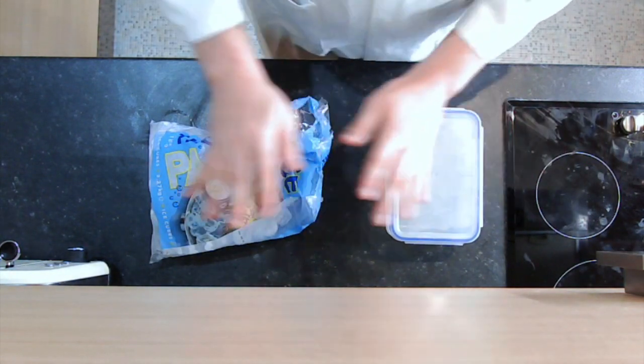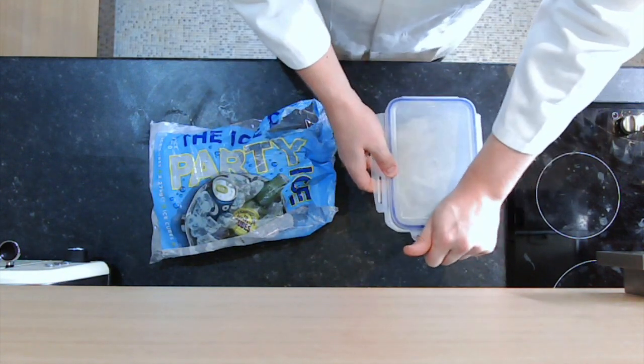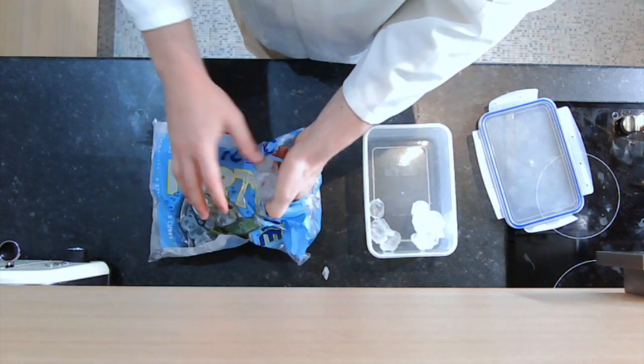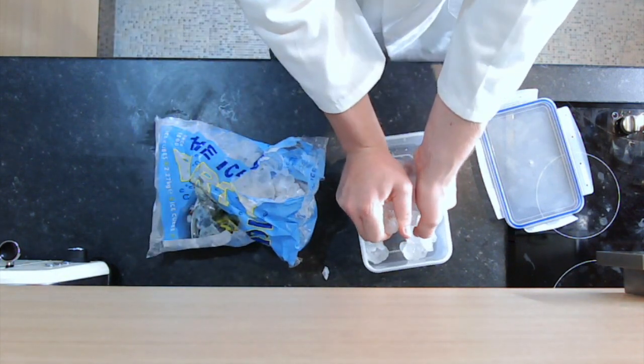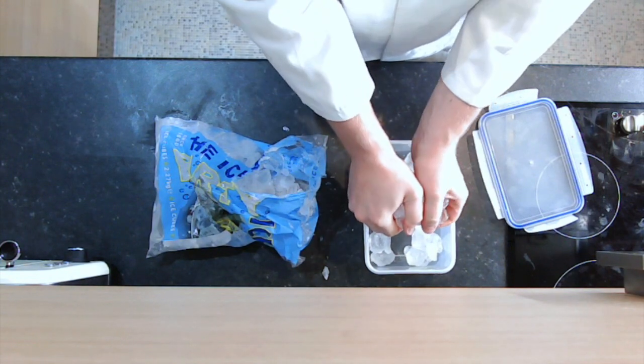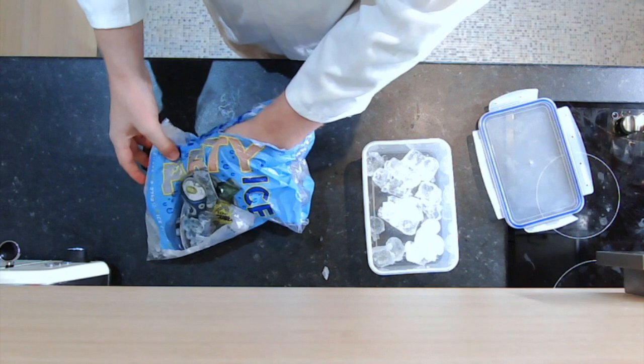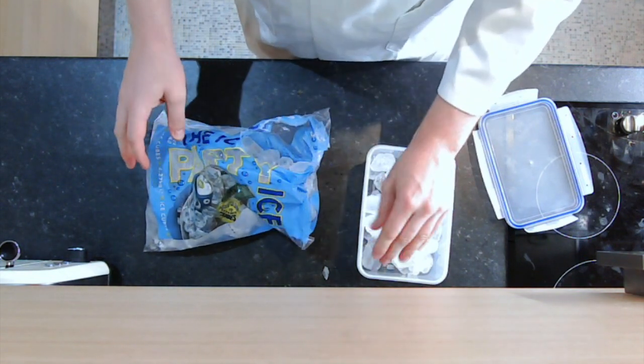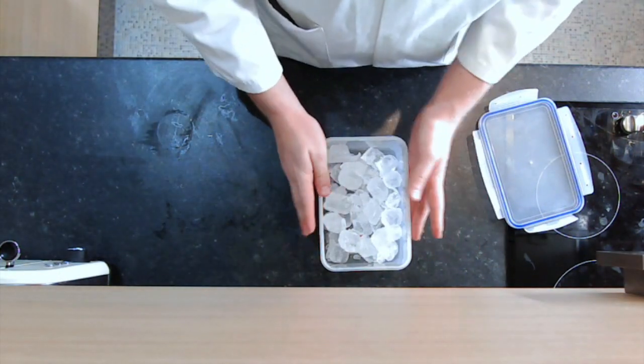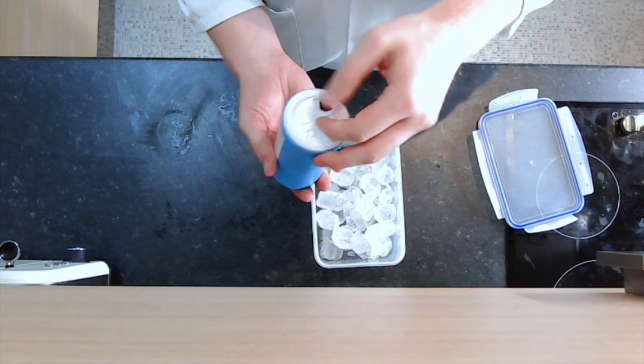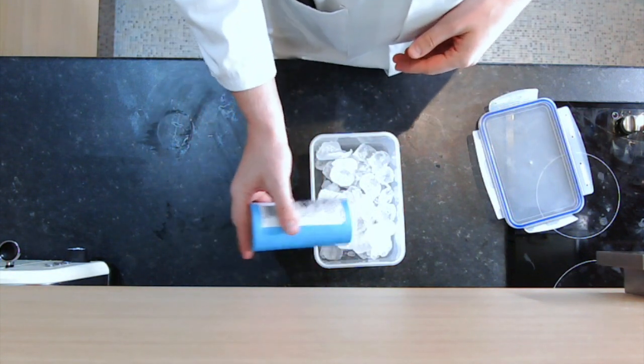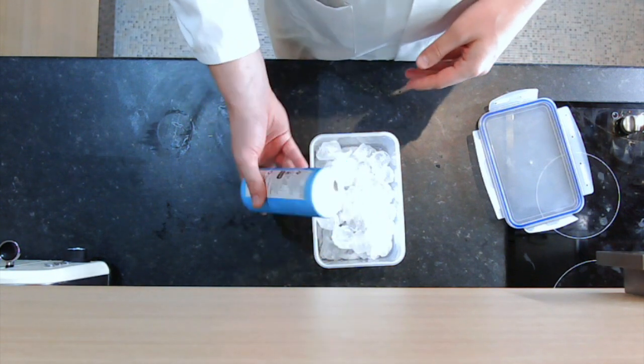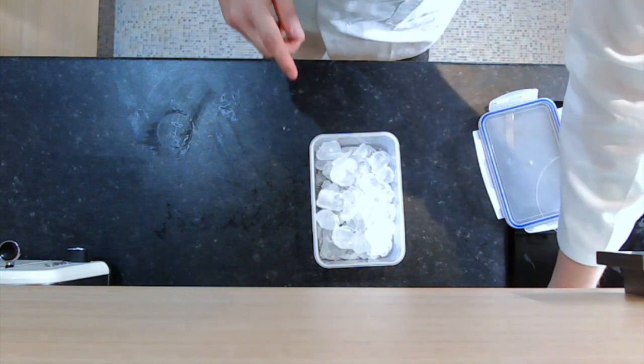So I'm going to take my Tupperware box and the ice and I'm going to quite generously fill that tub with ice. Now I've done that, I'm going to take my table salt and I'm going to add a really generous amount of salt in there. That really is quite a lot of salt.